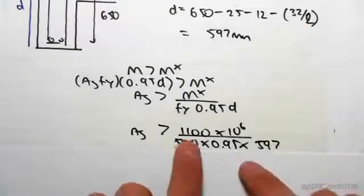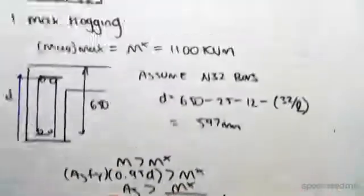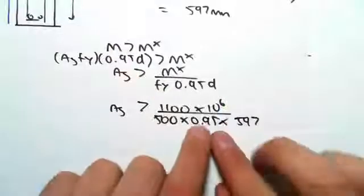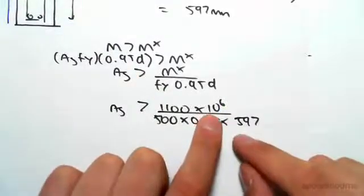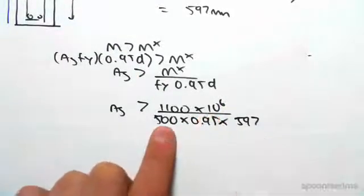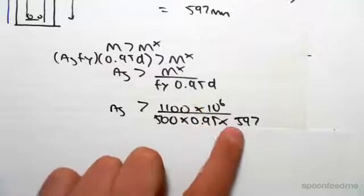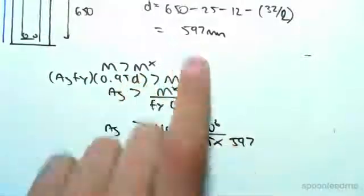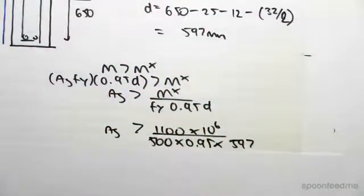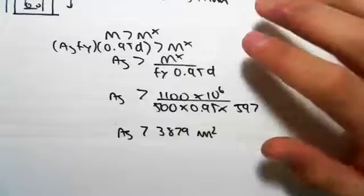The area of steel must be greater than the design moment, which is 1100 times 10 to the 6, putting it into newtons and millimeters. The yield stress of steel is 500 MPa, 0.95, and d we found to be 597. So that's d over there. Then simplifying this, we get A_s would have to be greater than 3879 millimeters squared.